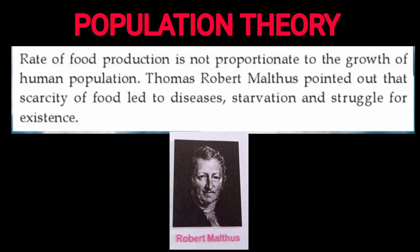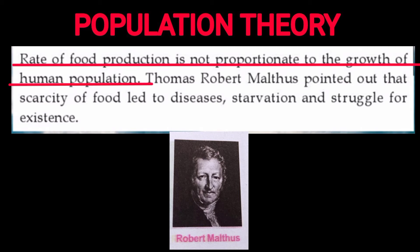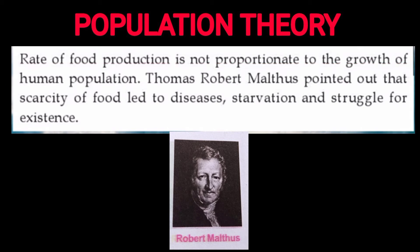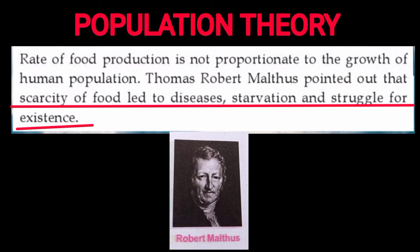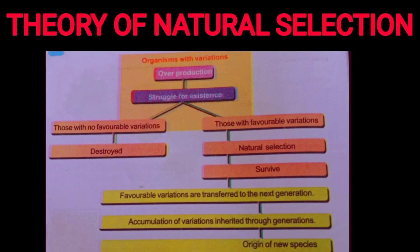Darwin observed differences in beaks among these finches. Robert Malthus's population theory argued that the rate of food production is not proportionate to the growth of the human population. The scarcity of food leads to disease, starvation, and struggle for existence.